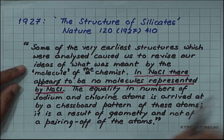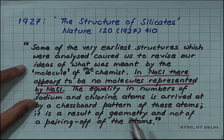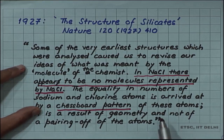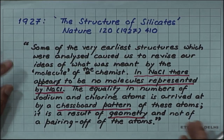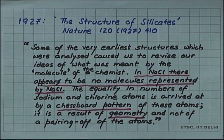The equality in number of sodium and chlorine atoms is arrived at by a chessboard pattern — that is, alternating sodium and chlorine as seen in the structure. It is a result of geometry and not a pairing of the atoms. So there is no pairing of sodium and chlorine atoms to form a sodium chloride molecule. This is what Bragg stated in 1927.